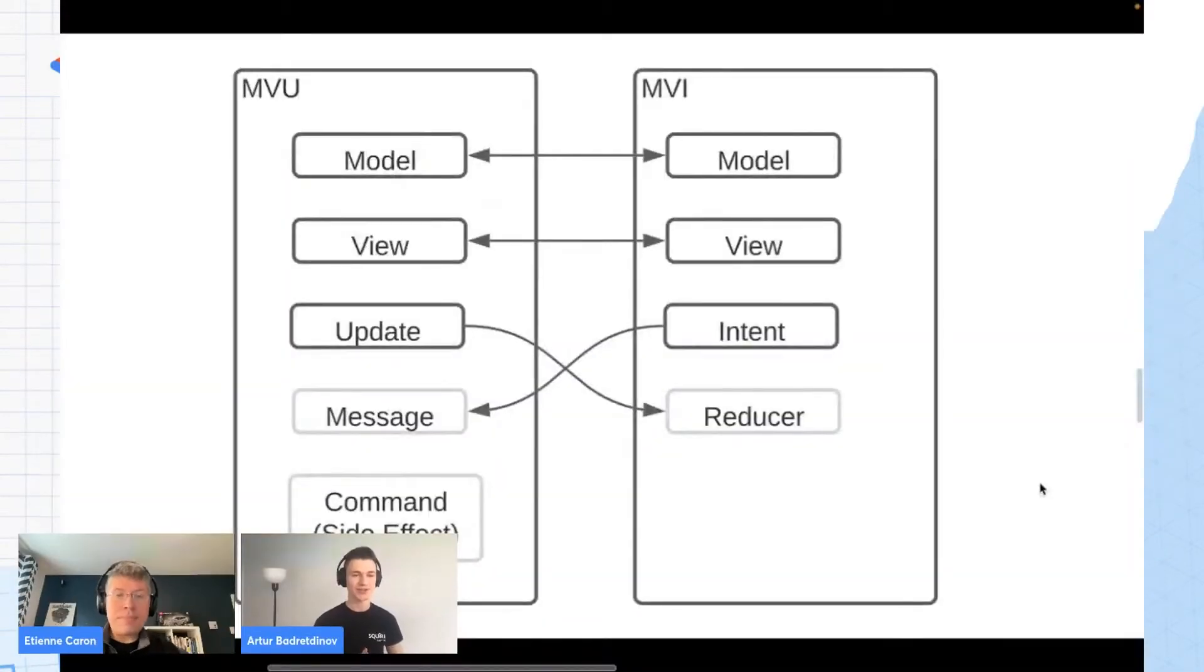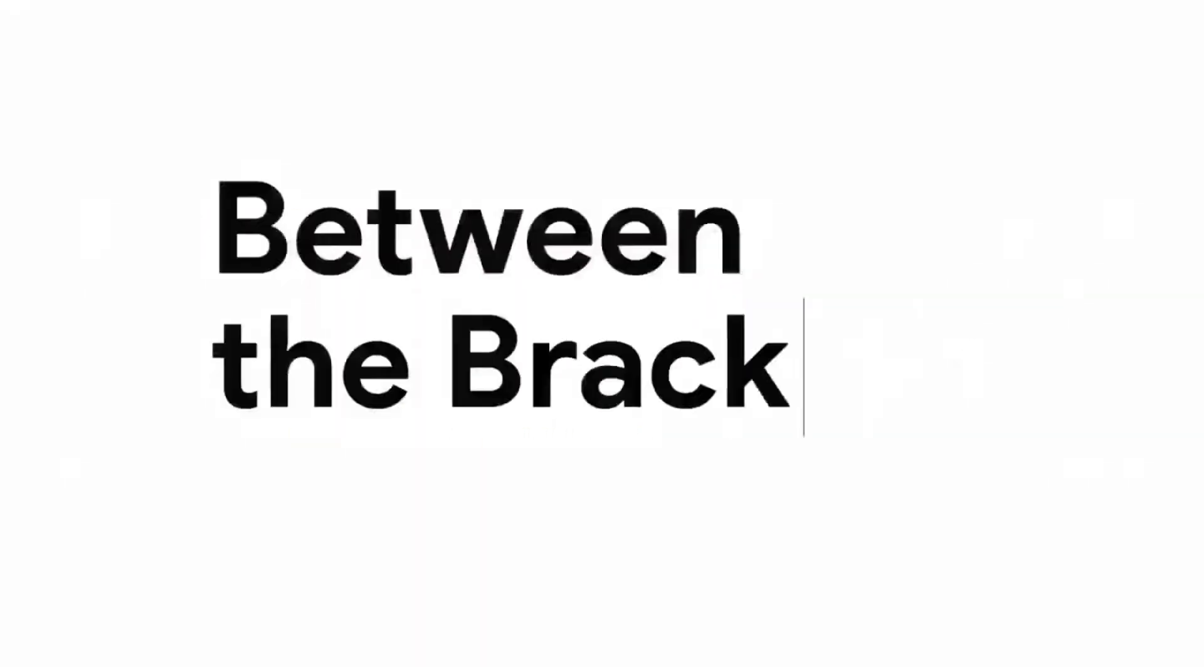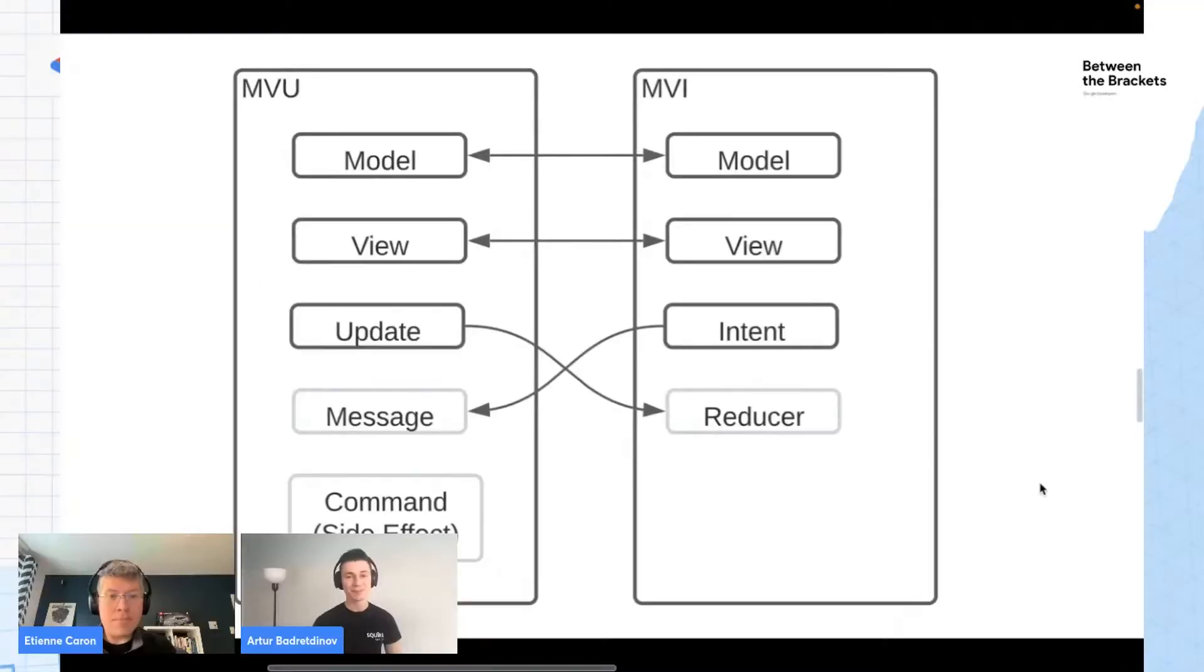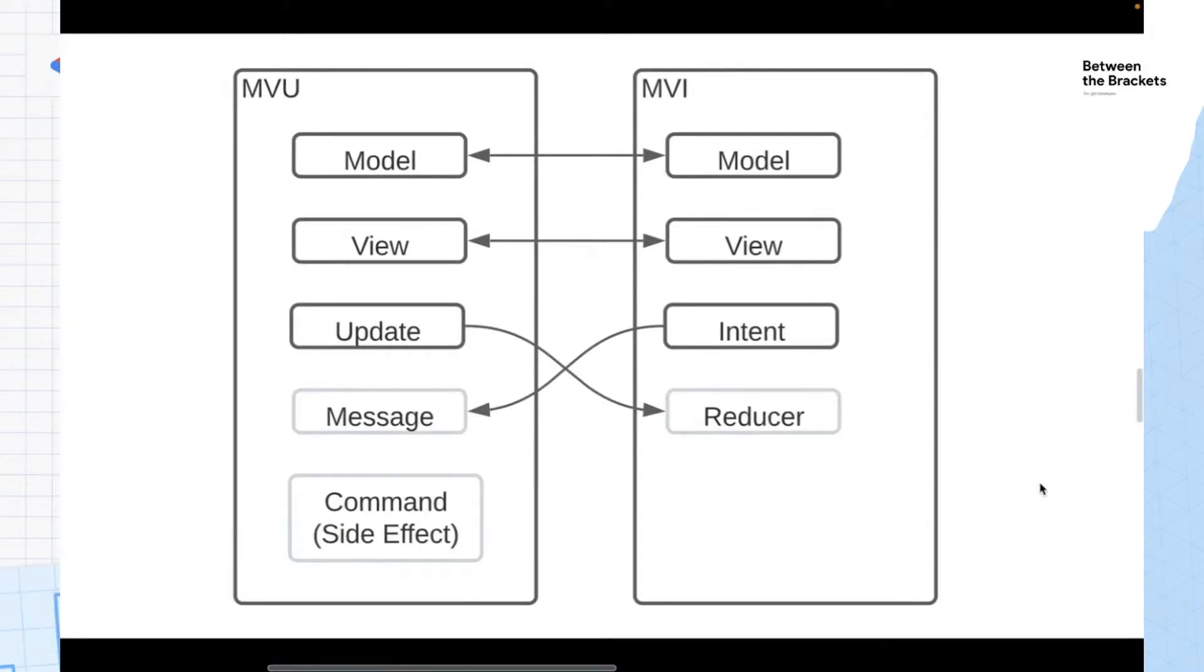As we have already discussed, both MVU and MVI are parts of these unidirectional flow approaches, so they are pretty similar to each other. They have just a little bit of difference in terms of terminology and in terms of how everything is structured. If you look at the MVU on the left and MVI on the right, you'll see that we have the same model and views. We have a little bit different names for the function that gets some messages, intents, or updates from the app.